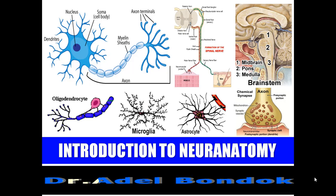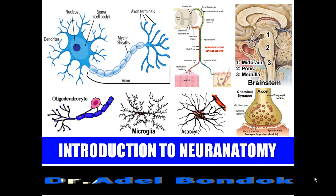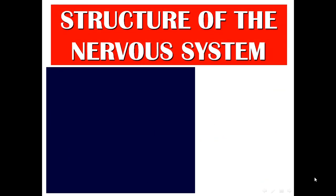Good morning. This is Dr. Adel Bondok, Professor of Anatomy and Neuroscience, Mansoura University, Egypt. Today I will talk about the structure of the nervous system. I will give you just an introduction to the study of neuroanatomy, and then I will talk about the ventricular system of the brain and the cerebrospinal fluid.